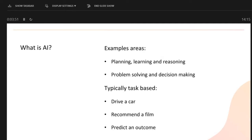Typical areas where AI is being used include planning — working out delivery schedules, Uber, where the taxi can be — all very driven by machine learning and data analysis. There's learning to recognise things, learning to make decisions, and problem solving, such as in mathematics. I'll also talk about the COVID situation as well.